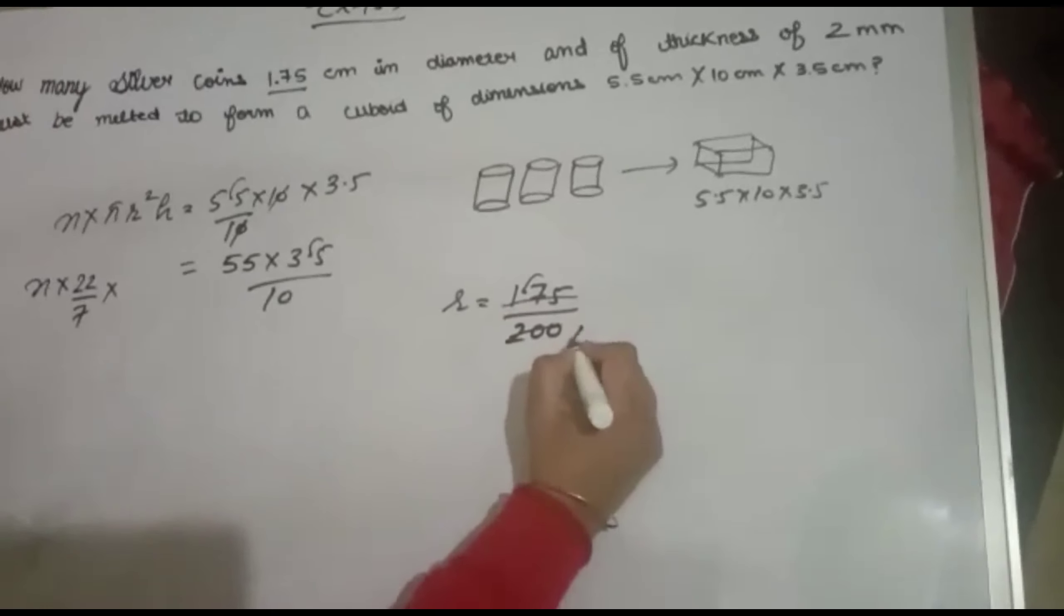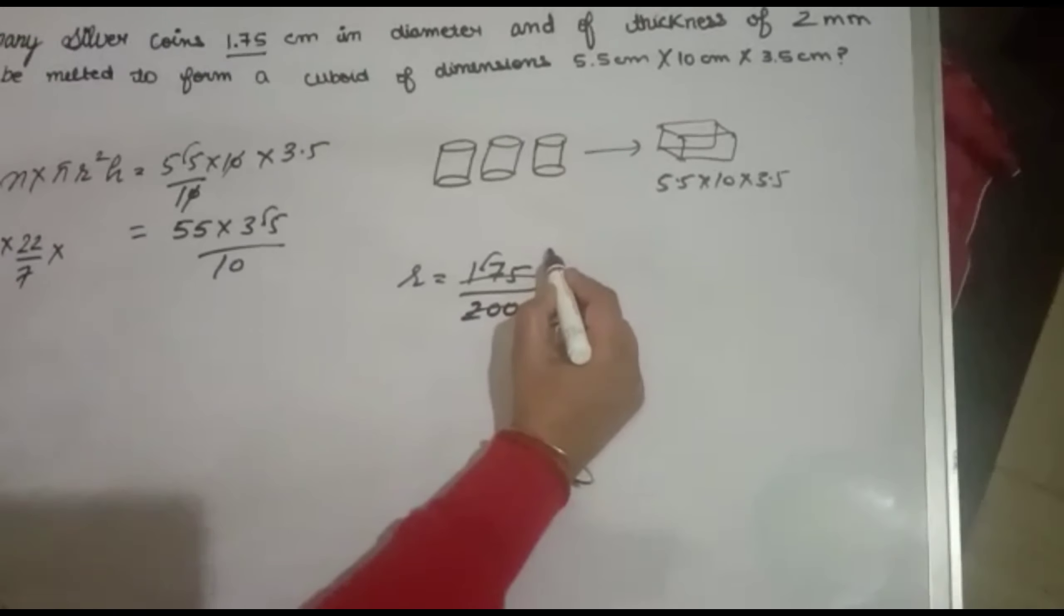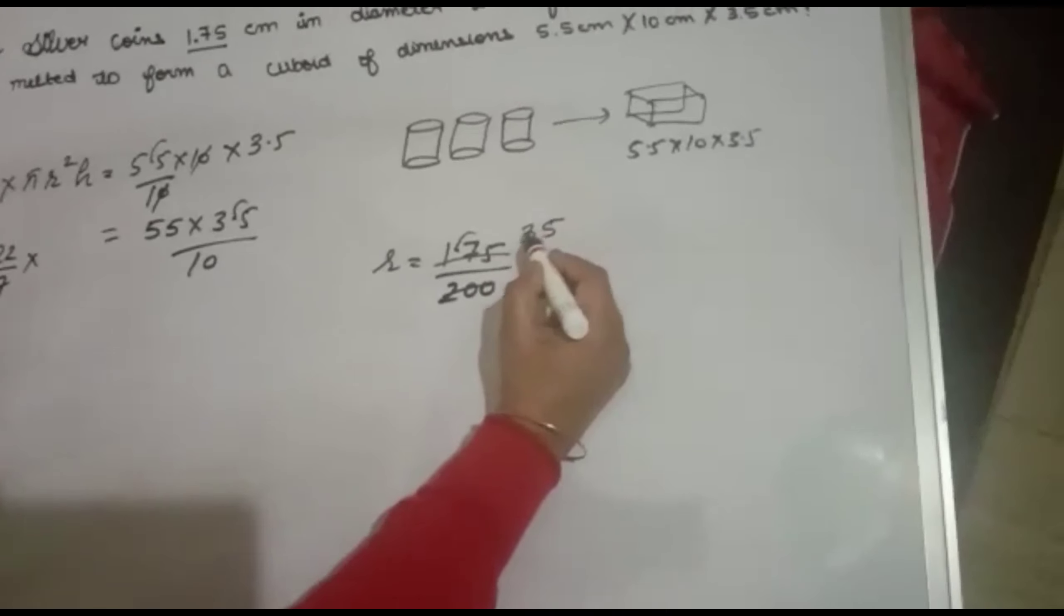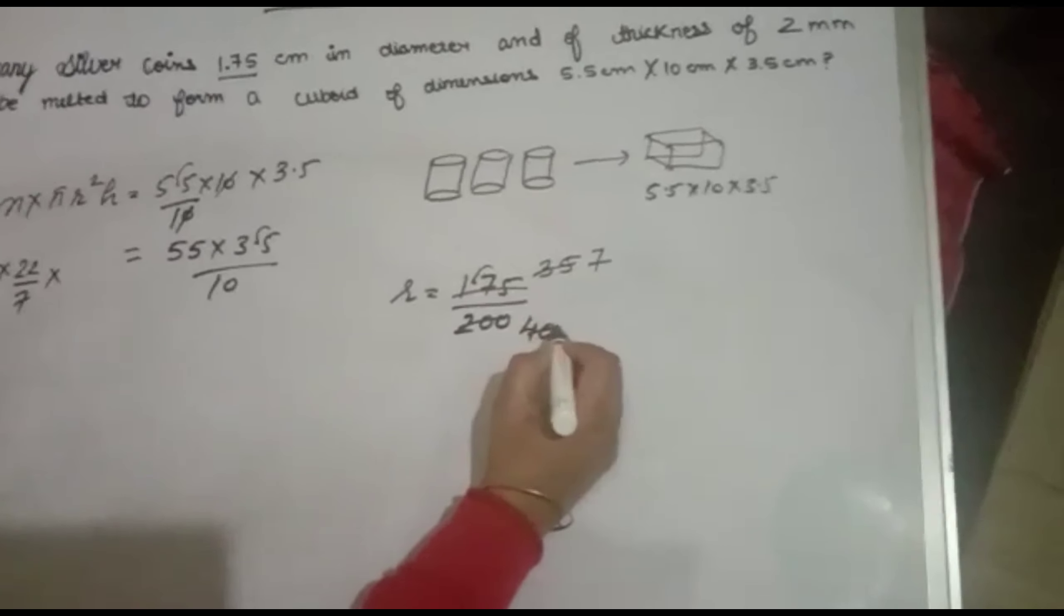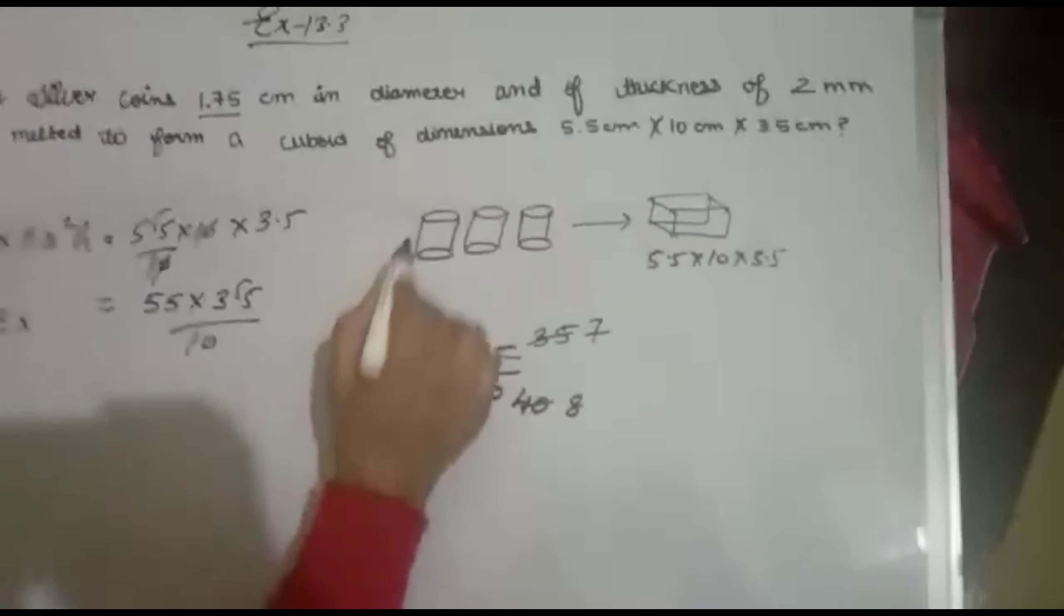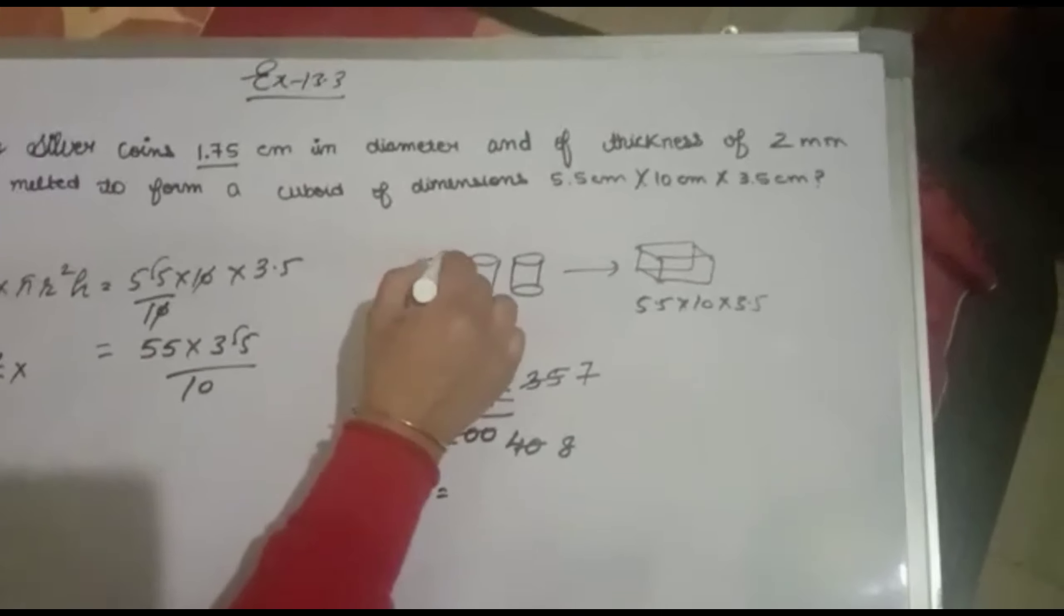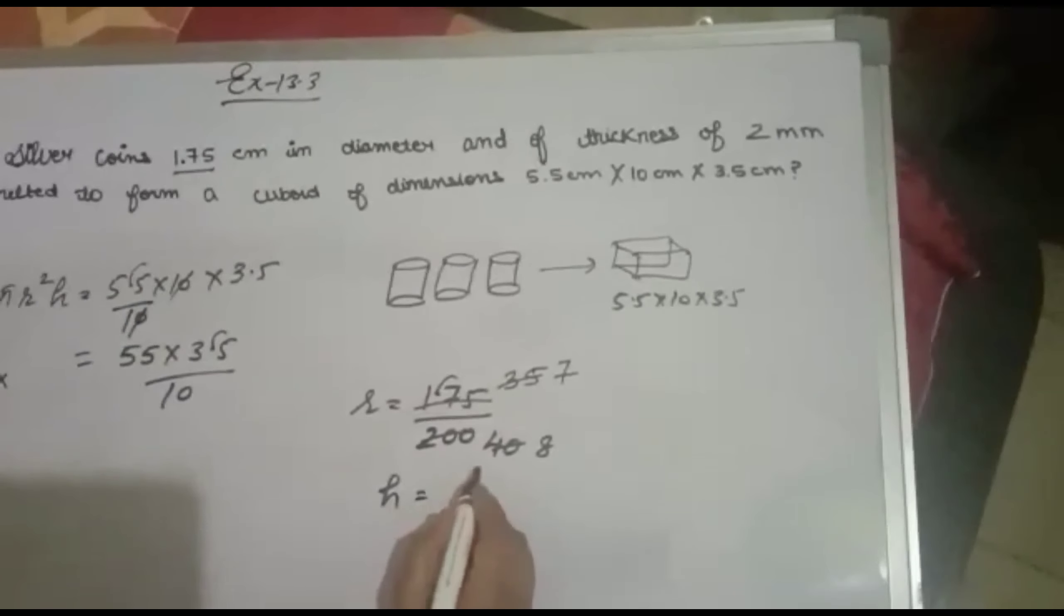Canceling by 5: 5×4=20, 5×0=0, 5×3=15, 5×5=25. Again by 5: 5×7=35, 5×8=40. The radius simplifies to 7/8. Height is 2 millimeters, which is the thickness.